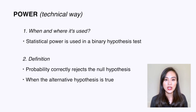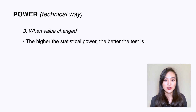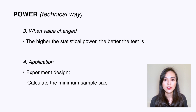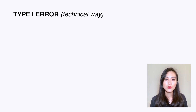Statistical power is used in a binary hypothesis test. It is the probability that a test correctly rejects the null hypothesis when the alternative hypothesis is true. In other words, it is the likelihood that a test will detect an effect when an effect is present. The higher the statistical power, the better the test. It is commonly used in experiment design to calculate the minimum sample size required to reasonably detect an effect.